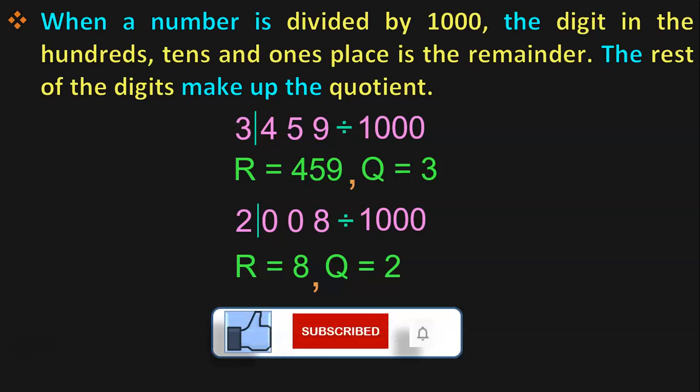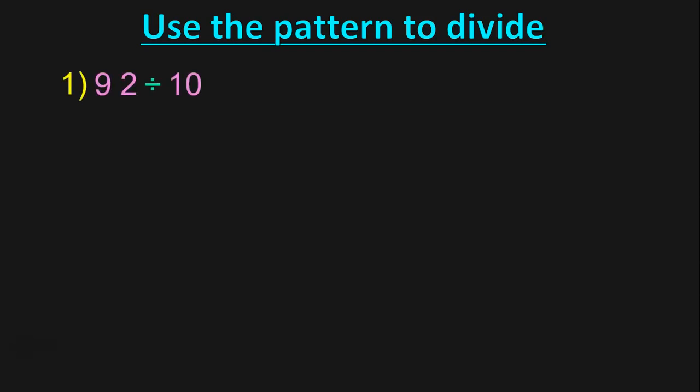Hope you have understood so far. Now, let us do multiple sums using the pattern to divide, to quickly see if we have understood the concepts. 92 divided by 10: draw a line after the 1's place. The remainder is 2 and the quotient is 9.